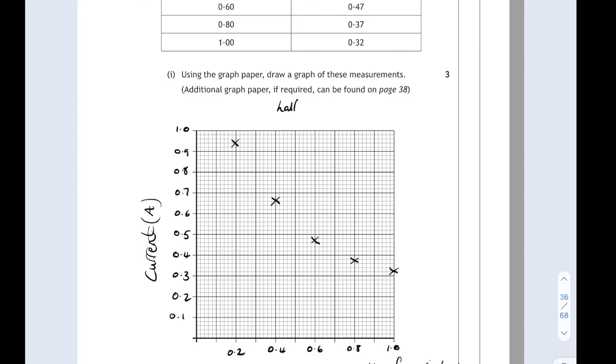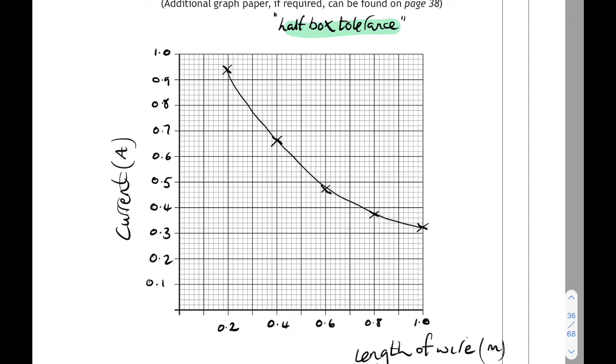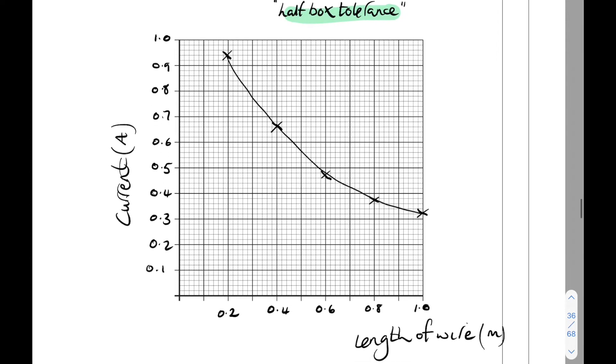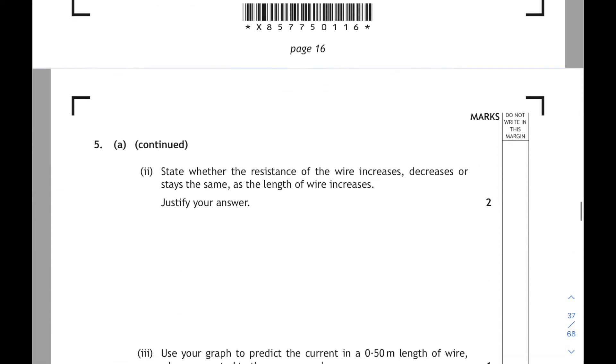When the length was 0.8, the current was 0.37. Taking care to plot these points very carefully, and then at 1 meter in length, it's 0.32 amps. Remember, these points have to be plotted to within a half box tolerance. Then we want our best fit line, straight line or curve, and that pretty much is us. That's the graph, and no doubt we'll probably need that later on in the question.